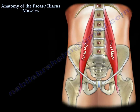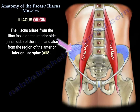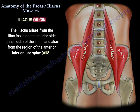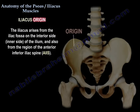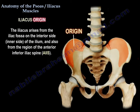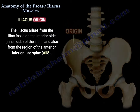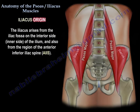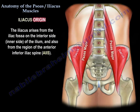The iliacus arises from the iliac fossa on the interior side, or the inner side, of the ilium, and also from the region of the anterior inferior iliac spine, as you can see here in this diagram.